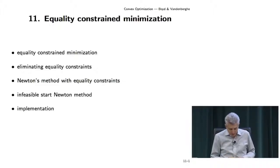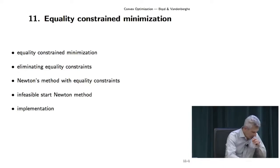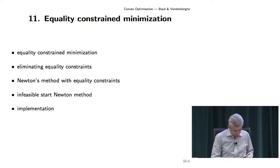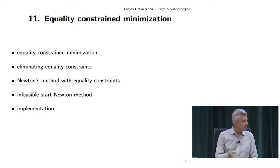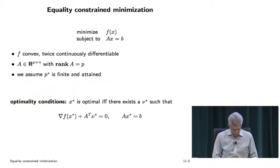What we're going to do now is look at equality-constrained minimization. We're stepping slowly towards solving general complex optimization problems. We're going to add constraints, but the easiest constraints to handle are equality constraints which are linear. And it turns out to be quite simple — we just reduce it to the other one.